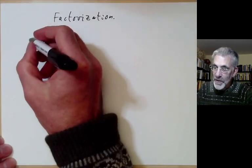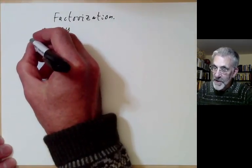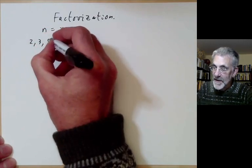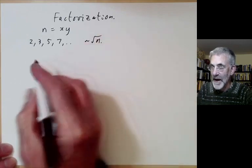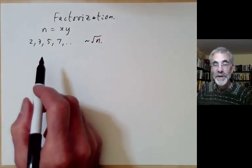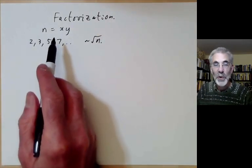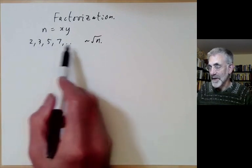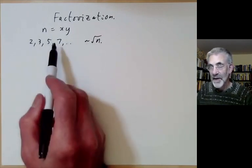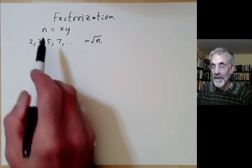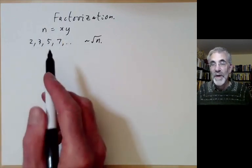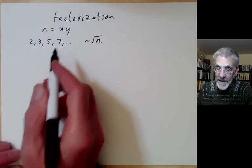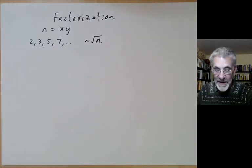What we could do is test to see whether n is divisible by various primes up to about the square root of n. This works fine if n is reasonably small. The problem is once n starts being large, this becomes prohibitively slow. If n has about 100 digits, it would take more than the age of the universe to factor n like this. So we need a better method.